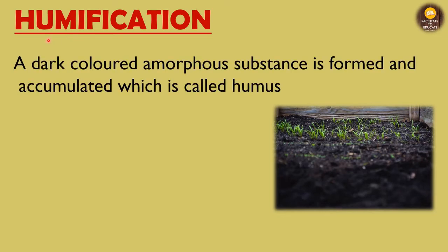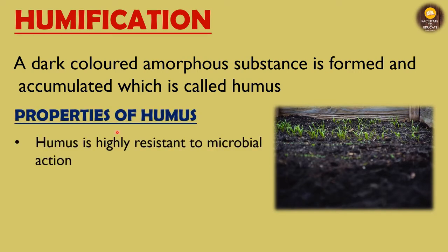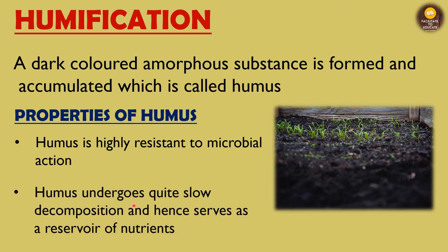The fourth step is humification, which is the formation of humus. A dark-colored amorphous substance is formed and accumulated in the soil, called humus. Humus has two key properties: it is highly resistant to microbial action, and it undergoes quite slow decomposition. Because of this, it serves as a reservoir of nutrients, slowly releasing them into the soil, which is very essential for plant growth.